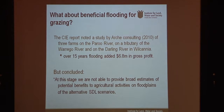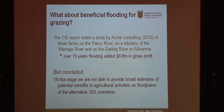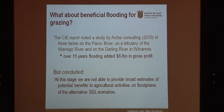What about beneficial flooding for grazing? The CIE looked at a report by Arch Consulting — partly funded by people in this room — covering three farms on the Paroo, the Warrego, and the Darling River. They found that over 15 years, flooding added $6.8 million in gross profit. But the CIE concluded they were not able to provide broad estimates of potential benefits in the cost-benefit analysis, because it covered only three farms with no systematic analysis across catchments. Arguably, graziers who benefit from flooding were not well represented in the political and economic debate due to a lack of data.